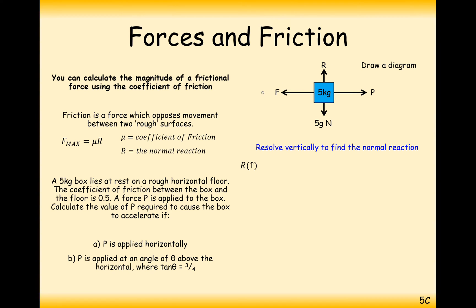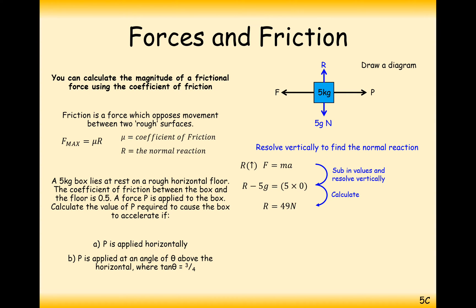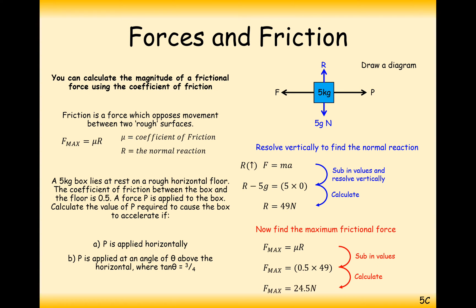We need the maximum possible frictional force, so first find R by resolving vertically. There's no vertical acceleration, so R equals 5g, which is 49 newtons. Maximum friction is 0.5 times 49, giving 24.5 newtons. So for the particle to start moving to the right, P must be greater than 24.5 newtons — or exactly 24.5 newtons is the force that just starts to accelerate it.